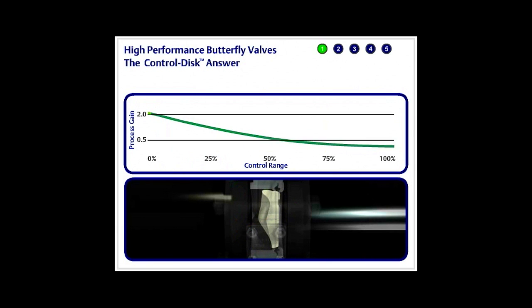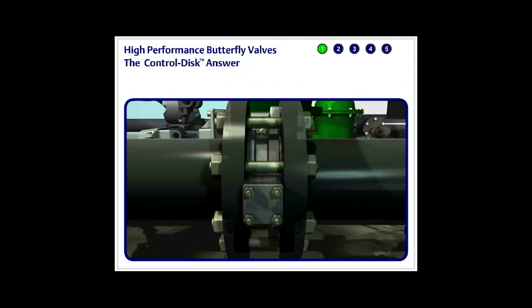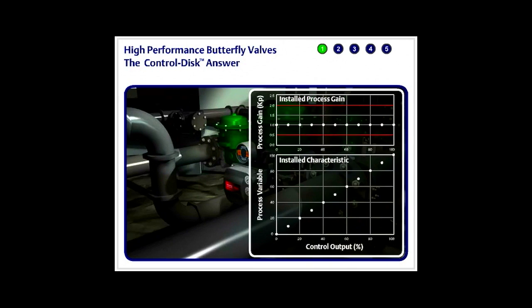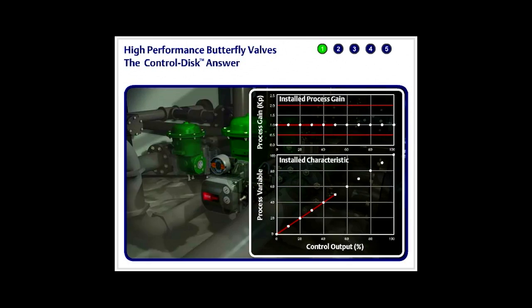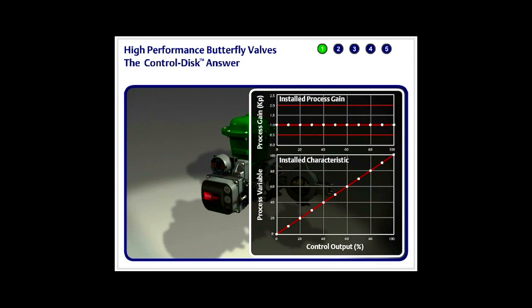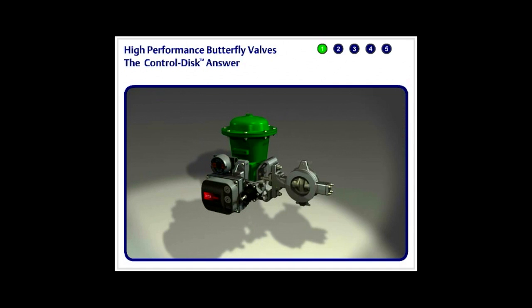But that's not all. The control disc valve features a unique and patented disc profile that provides an installed linear flow characteristic with a resulting gain of 1.0, a combination that is typically preferred for process control.